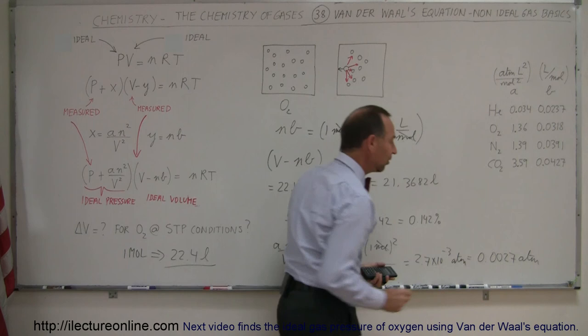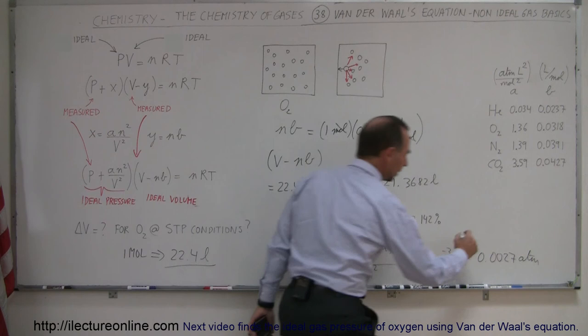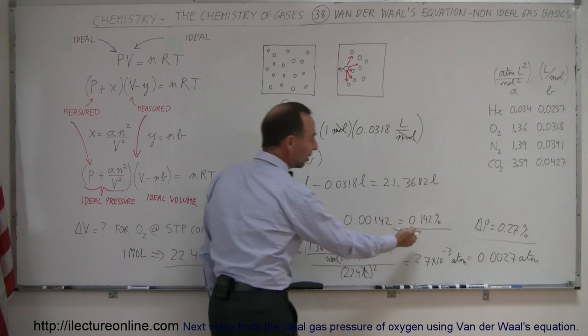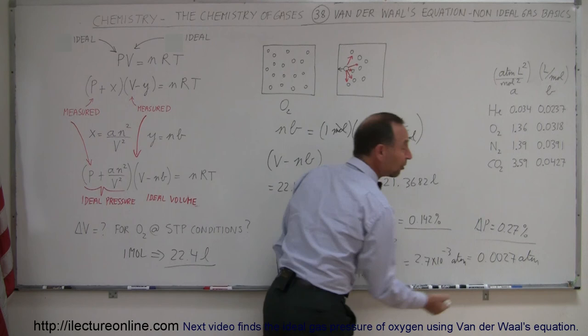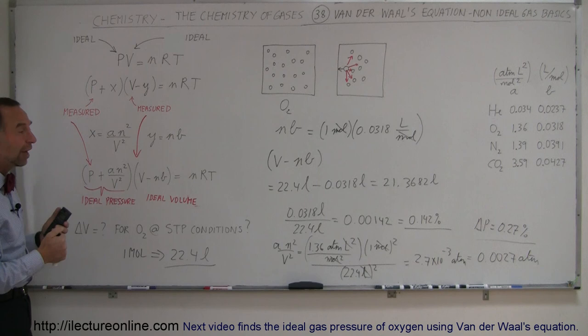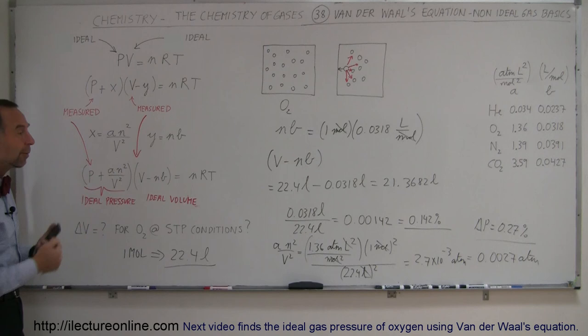So the change in pressure is only 0.27% — on the same order as the volume correction. Under STP conditions with oxygen, we see a little more than 0.1% change in volume and about 0.27% change in pressure due to non-ideal behavior. These are small effects under these conditions, but in the next examples we'll show how at very high pressures and very high molecular densities, the van der Waals equation becomes really necessary to produce accurate values to plug into the ideal gas equation.